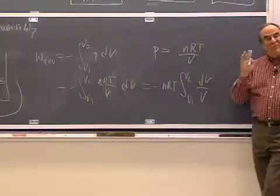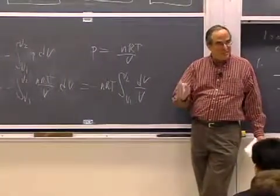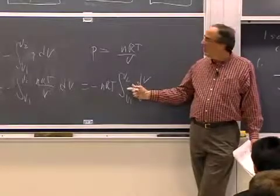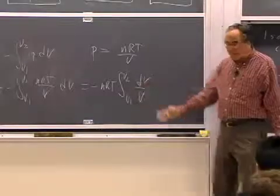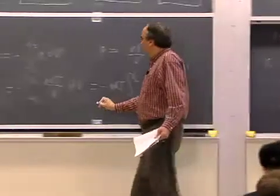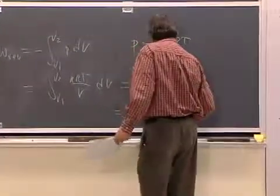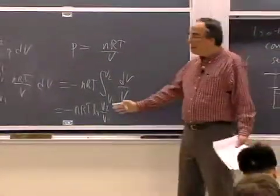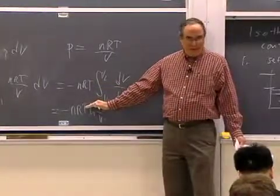Now, we are very gentle in this course with respect to knowing integrals, but this is one you have to know. The integral of 1 over a quantity is the natural log. And so we can write this minus nRT log V2 over V1. That should not take a breath if you know that much about integrals.